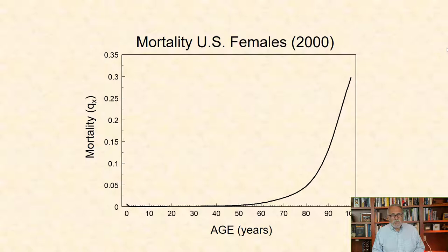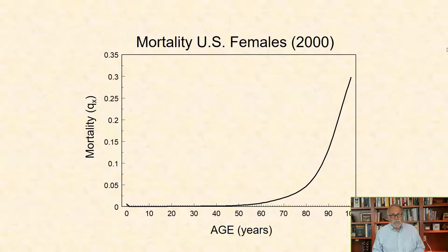Consider this graph of U.S. female mortality in 2000, with age on the x-axis and age-specific mortality, Qx, on the y-axis. It is clear from this graph that there is a distinct regularity in the rate of change with age and mortality.